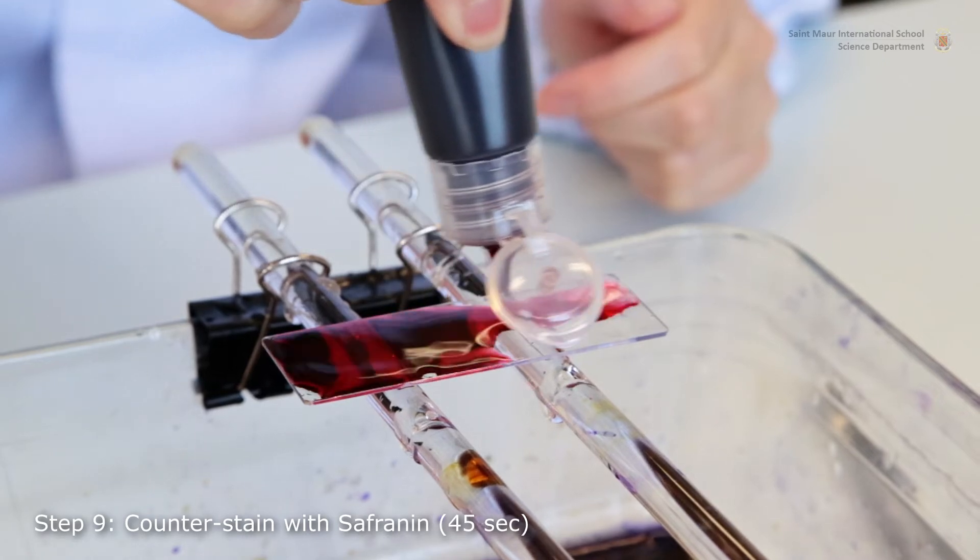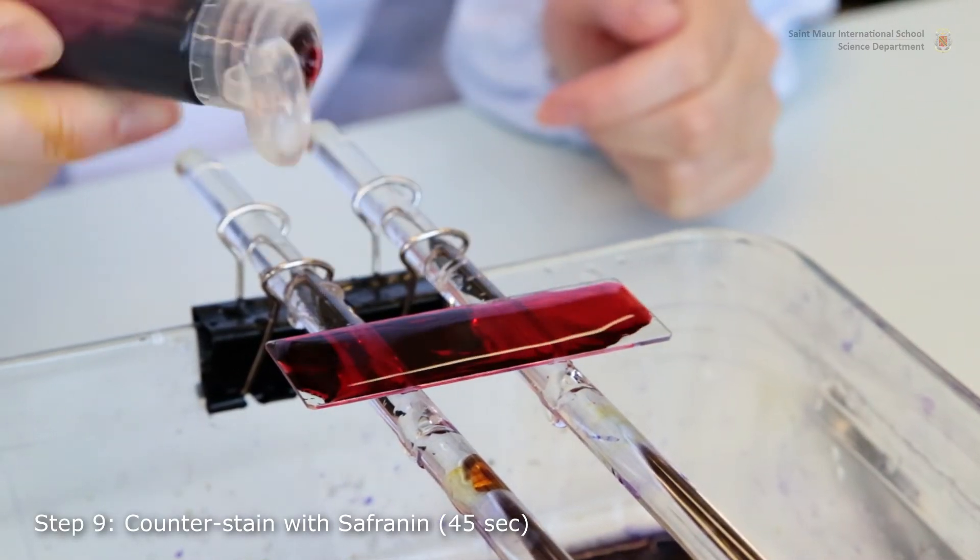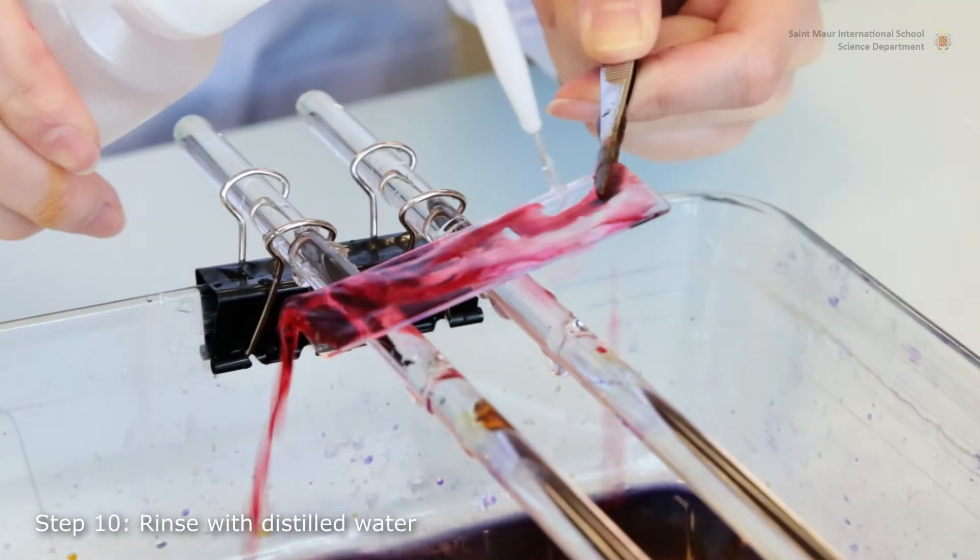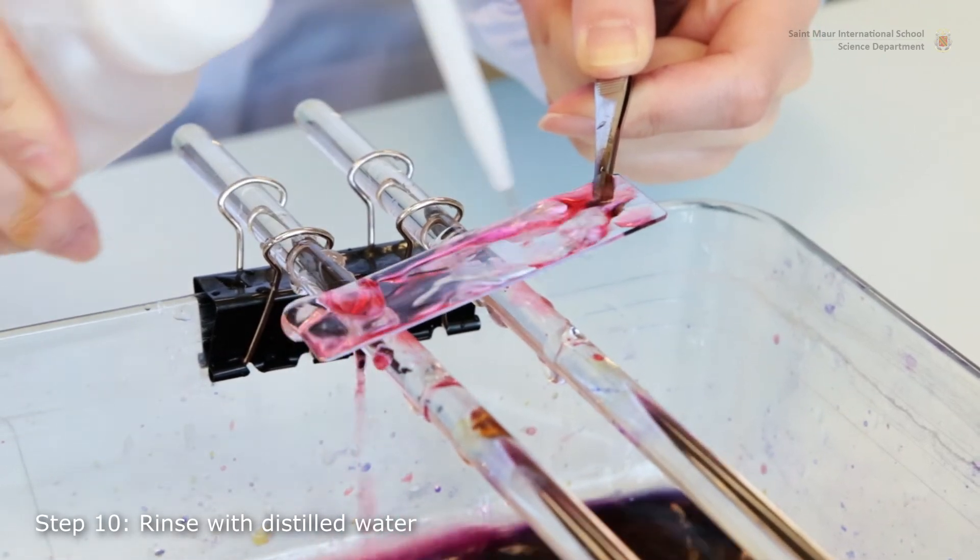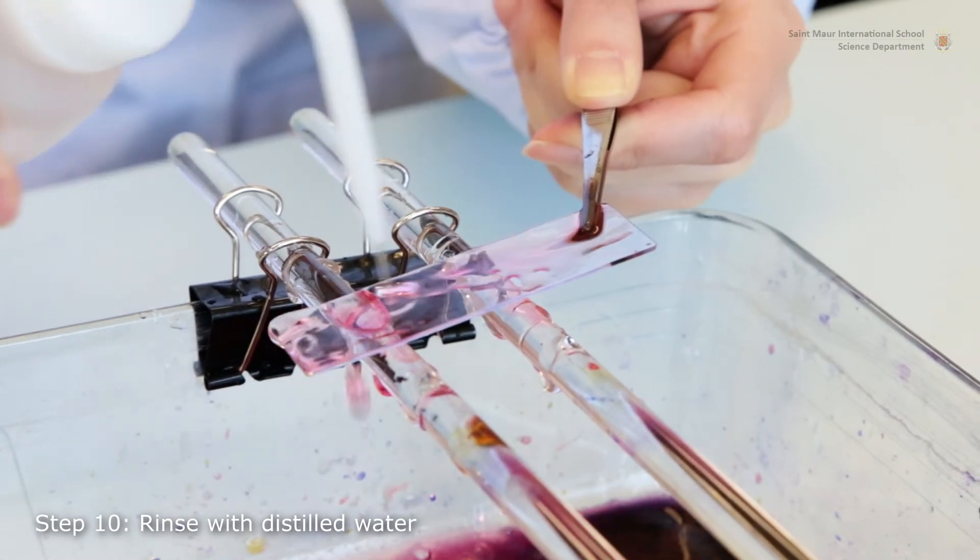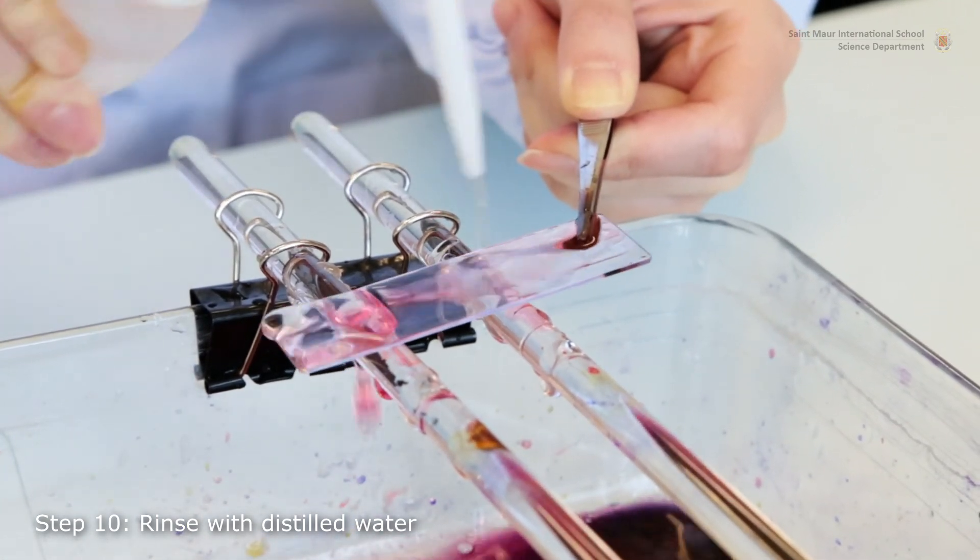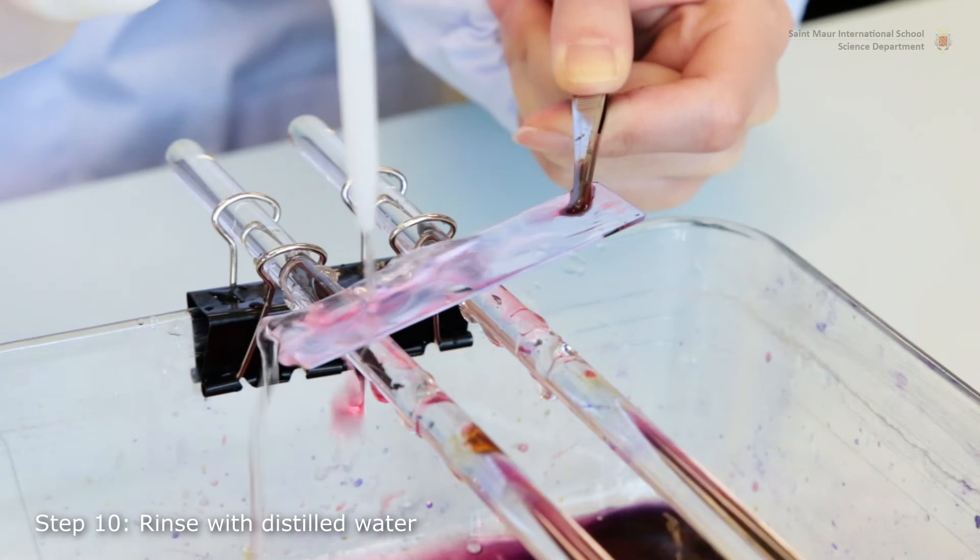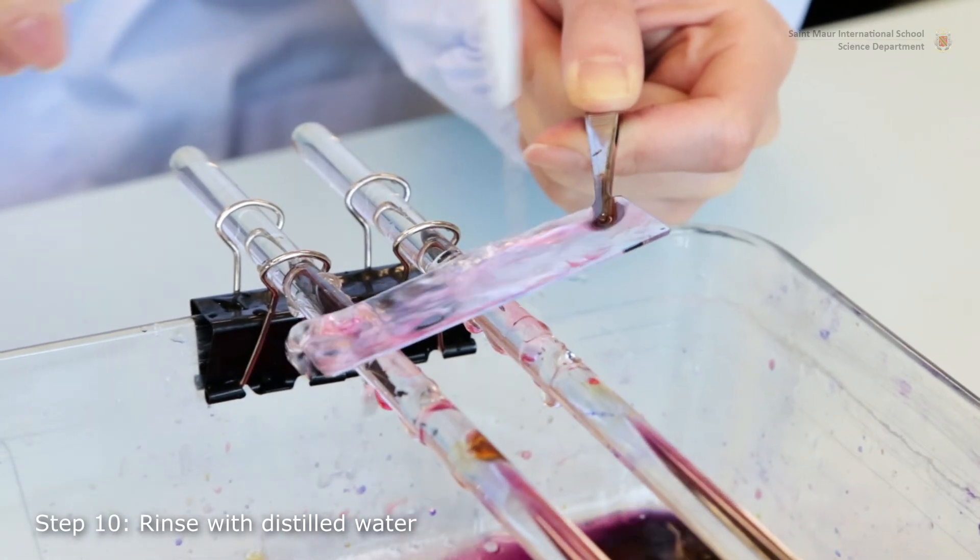Safranin is used to counterstain in pink the Gram-negative cells that lost crystal violet. Gram-positive bacteria are still stained with the darker crystal violet and therefore, Safranin will be invisible. A last thorough rinsing with distilled water is performed.